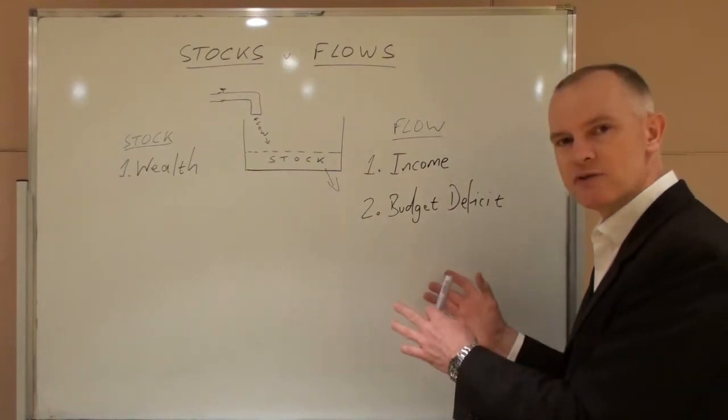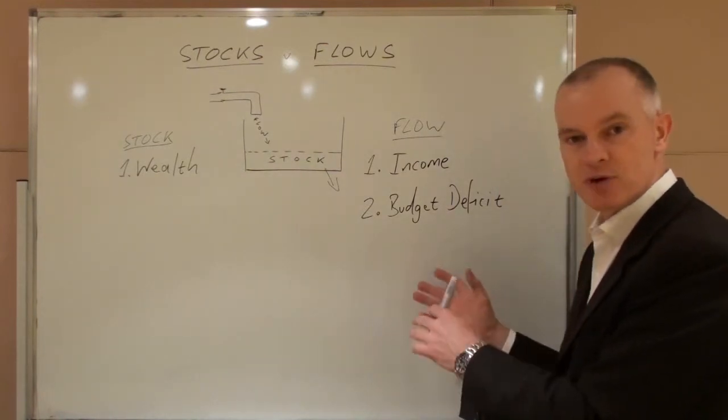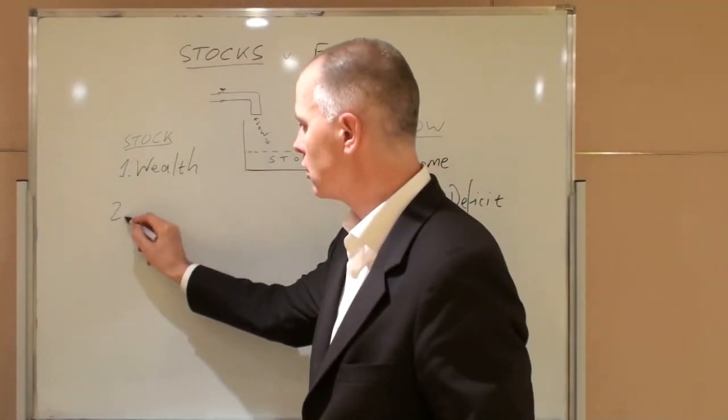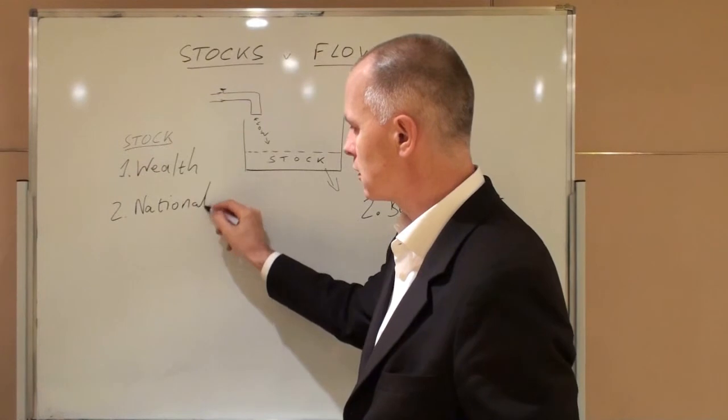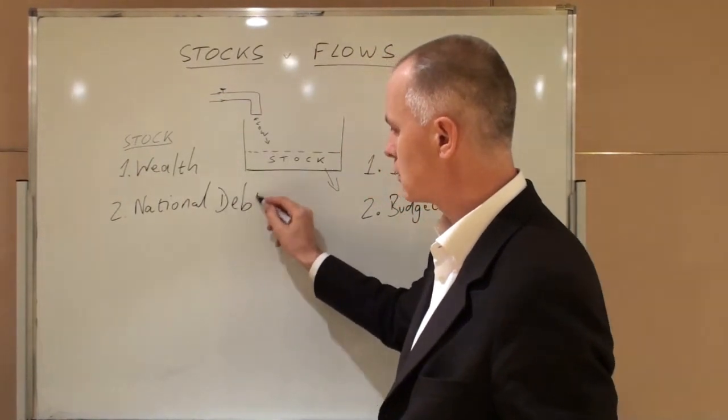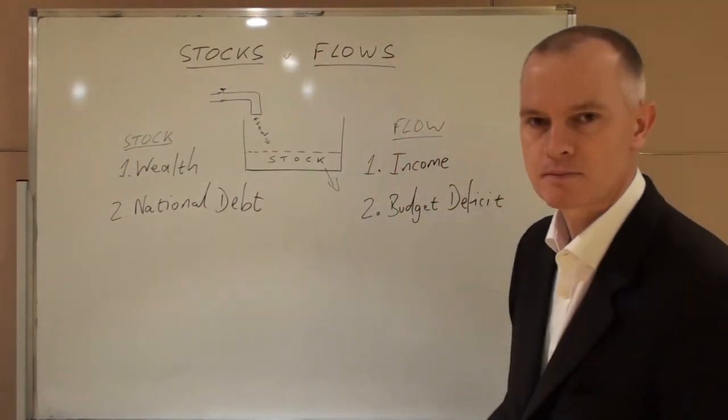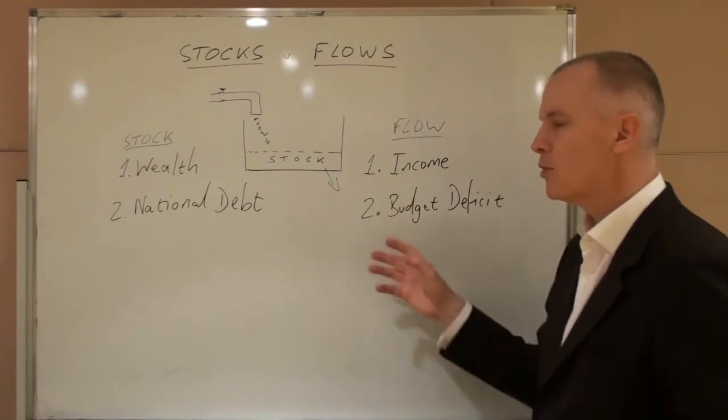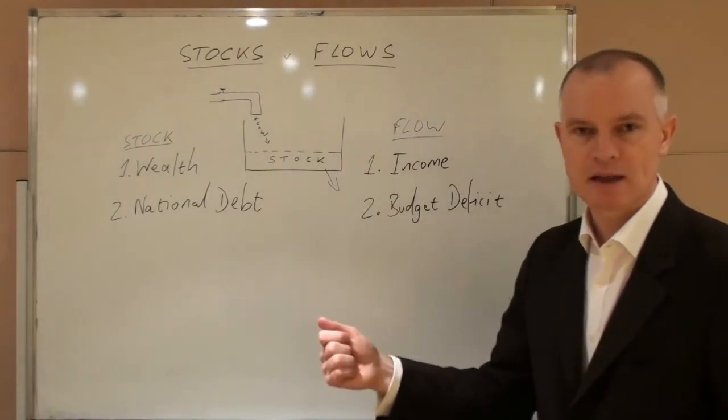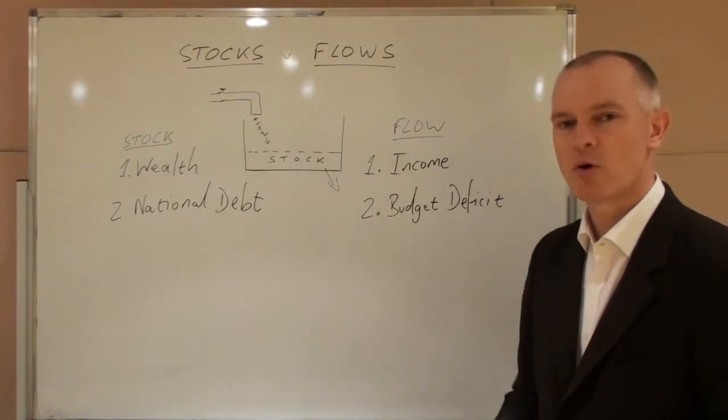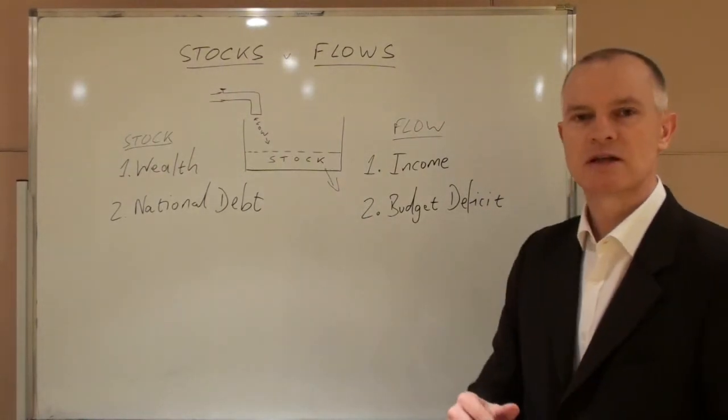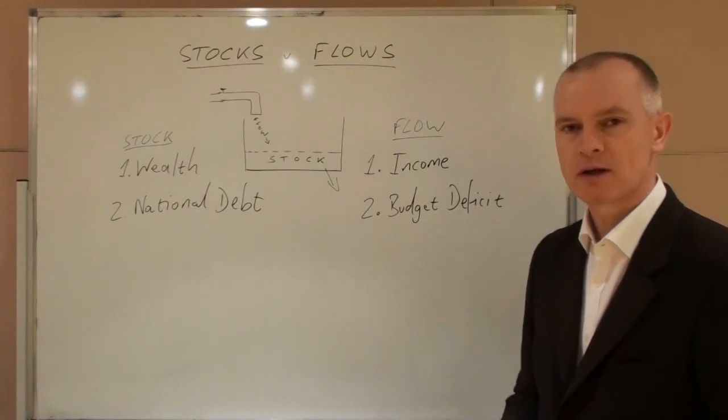The budget deficit therefore, if it is positive, adds to the stock of bonds, the outstanding national debt that a country currently has. Both of these require bonds to finance them. But national debt is a stock of borrowing whereas a budget deficit is a flow of borrowing in a particular time period.